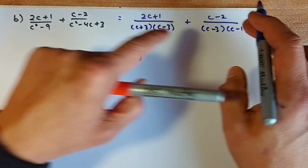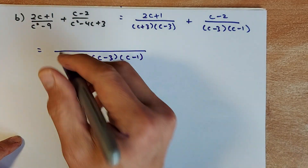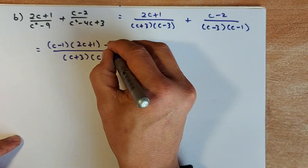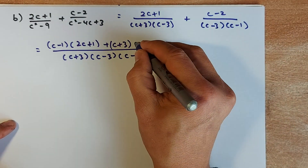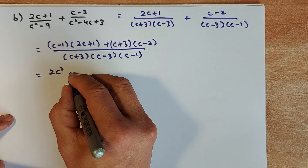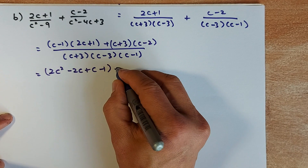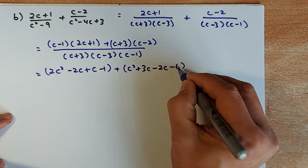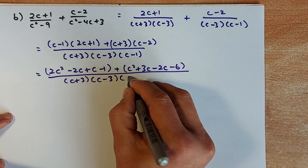The first fraction divided by the common denominator leaves (c − 1), so you put (c − 1)(2c + 1) on top. For the second fraction, dividing by the common denominator leaves (c + 3), so you put (c + 3)(c − 2) on top. Now expand: the first expansion gives 2c squared − 2c + c − 1, and the second expansion gives c squared + 3c − 2c − 6. The denominator remains (c + 3)(c − 3)(c − 1).